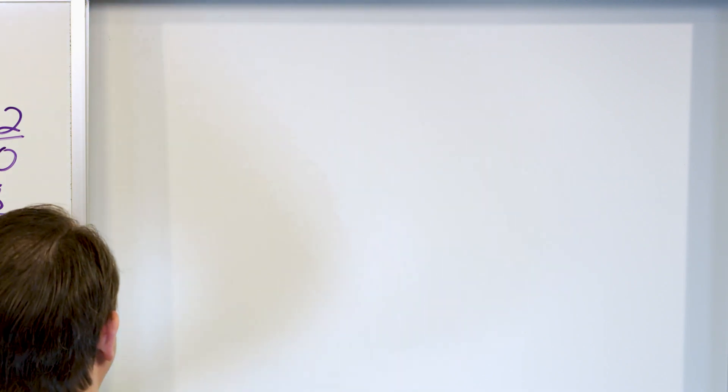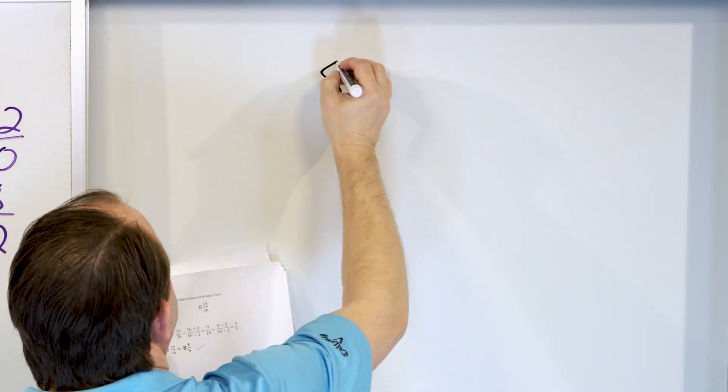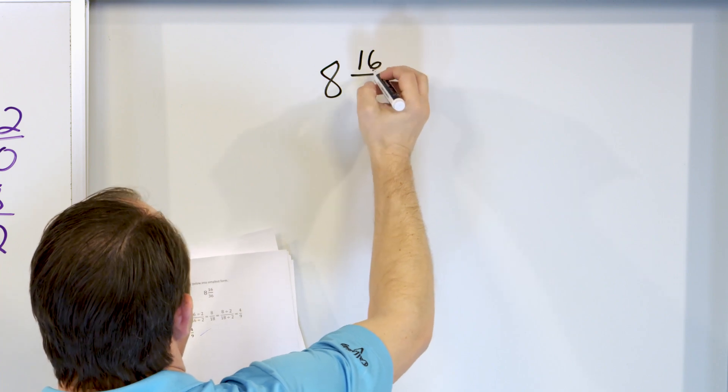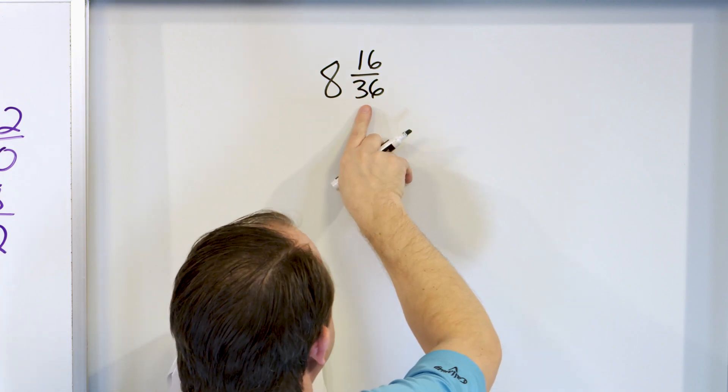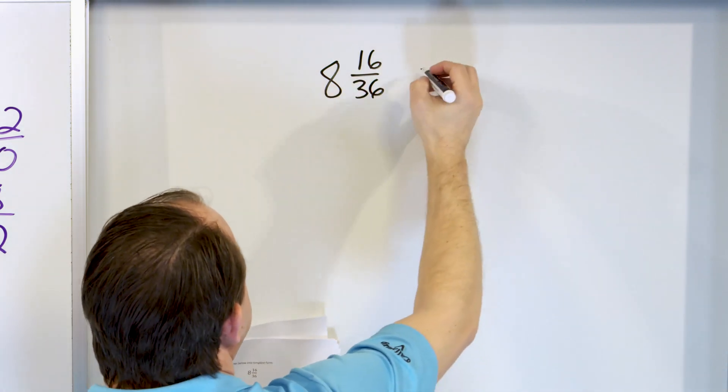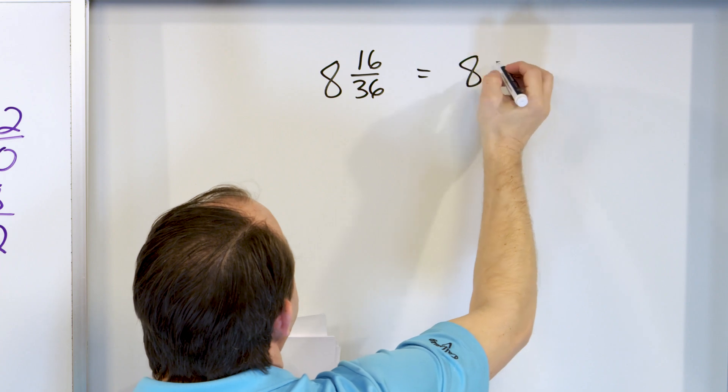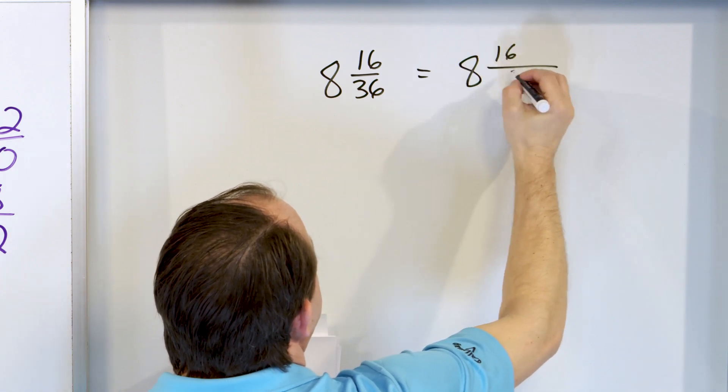So we only have two more problems. Here we go. 8 and 16/36ths. So this is again a proper fraction, so we don't have any improper anything to do with there. What can we divide by? I'm not really sure, but I know that I can divide by 2.